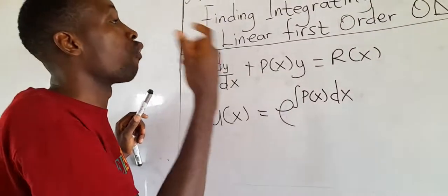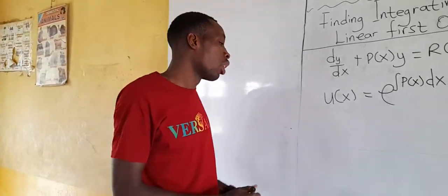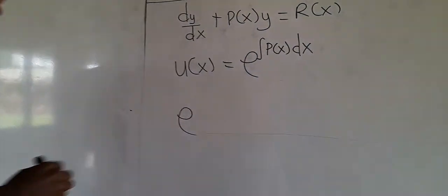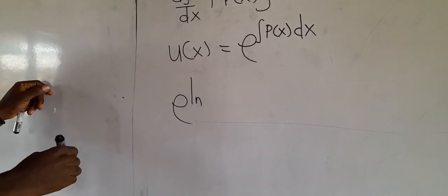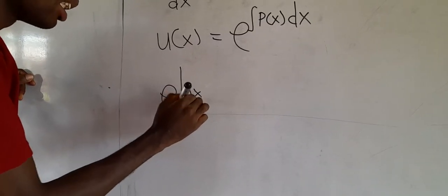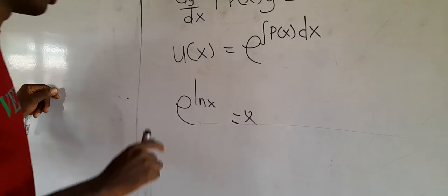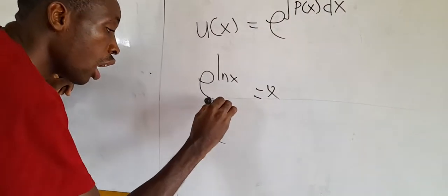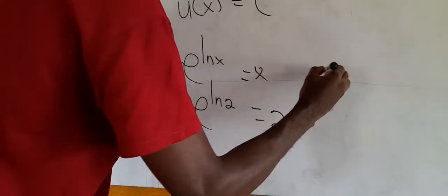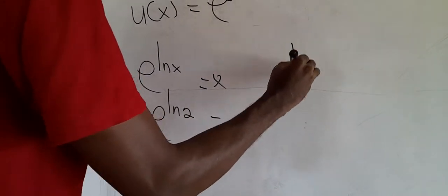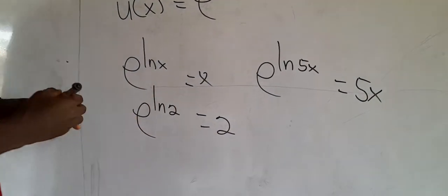Before we find the integrating factor, I want to explain something. Any time an exponential function meets a logarithmic function — for example, e to the power of ln(x) — the answer is just x. If you have e to the power of ln(2), the answer is 2. If you have e to the power of ln(5x), the answer is 5x. Take very good note of it.